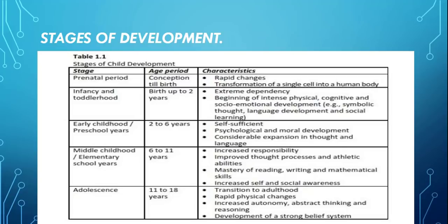چوتھی stage میں وہ ذمہ داریاں اپنی لینا محسوس کرتا ہے۔ سکول میں بچے کو معلوم ہوتا ہے کہ اسے سکول بھی جانا ہے، وقت پر واپس بھی آنا ہے، teacher کام بتاتی ہے تو وہ اس ذمہ داری کو نبھانے کی کوشش کرتا ہے، گھر میں بھی چھوٹی چھوٹی ذمہ داریاں adopt کرنا شروع کر دیتا ہے۔ 6 سے 11 سال تک کی عمر میں بچے کے اندر responsibilities لینے کی development ہوتی ہے، اس کے ساتھ ساتھ improved thought processes اور athletic abilities آتی ہیں، اور mastery of reading، writing and mathematical skills ہو رہی ہوتی ہے۔